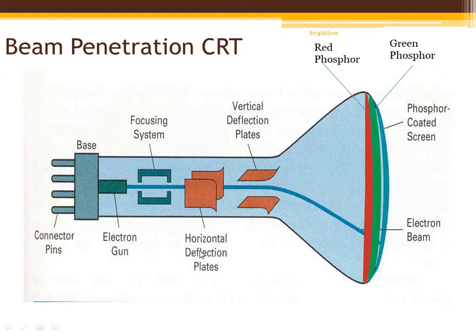CRT incorporates different colors by using a combination of phosphors that emit different colored lights, which gives a vast range of colors. So basically it is the combination of different colored phosphors that gives us different colors in color CRT. There are two technologies for this: beam penetration and shadow mask CRT. Beam penetration CRT is slightly simpler while shadow mask CRT is slightly more complicated.